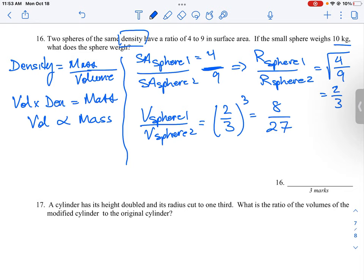The volume of the small sphere is 8, and sphere 2 is 27. We know from our density explanation that if we know volume, it's proportional to mass. So we can take our ratio of 8 over 27 and make that equal to 10 kilograms over x, because 10 kilograms is the small sphere and we want to know how big the large sphere is.